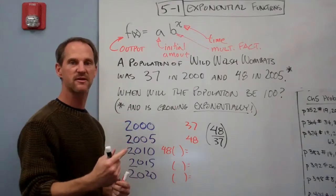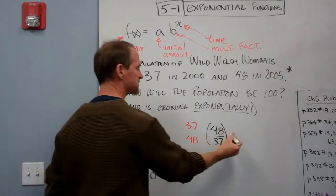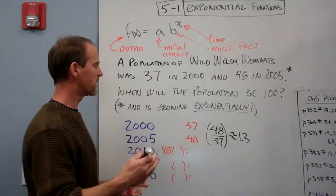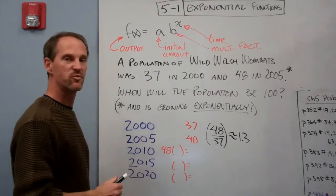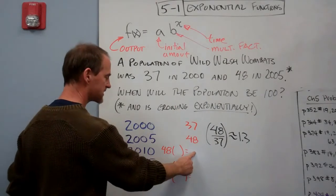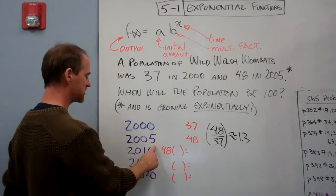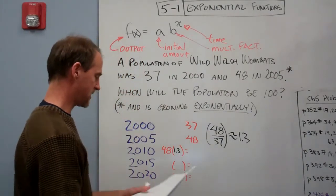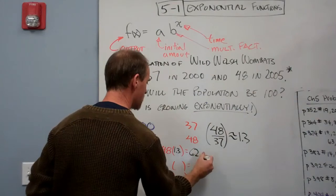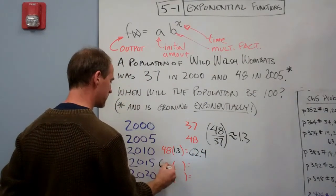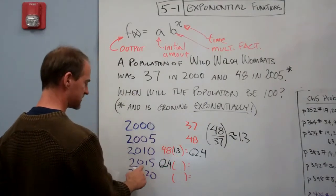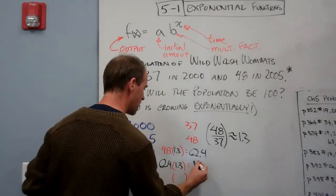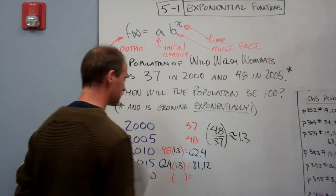You can punch that into your calculator and come up with a decimal. You can leave it like that if you prefer. It's very close to 1.3. So sometimes in the real world, we'll round up or down to get a nice number. It's a little bit less than 1.3, so we'll go with that. So how do I find the next? Well, I multiply the population in 2005 by our growth factor, 1.3, and that's going to give me approximately 62.4. Then I would take 62.4, that population, and multiply to find out in the year 2015 what the population will be, and that's going to be around 81.12.